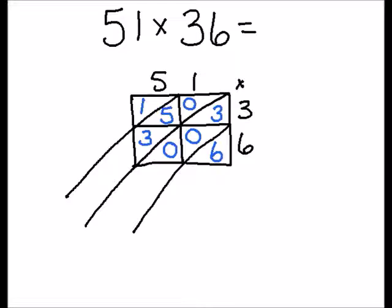All right we're ready to add. Remember we're adding the columns diagonally. The first column has a 6 all by itself so that 6 stays there. 3 plus 0 plus 0 is still 3. 0 plus 5 plus 3 is 8. And 1 all by itself is 1. So our answer is 1,836.